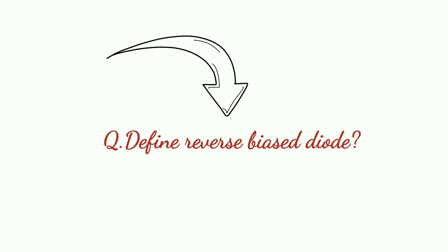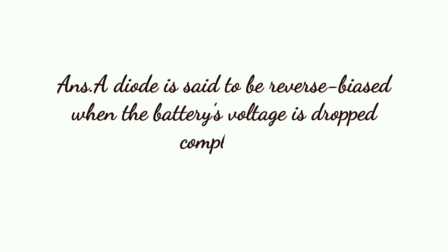Next: Define Reverse-biased Diode. A diode is said to be reverse-biased when the battery's voltage is dropped completely.